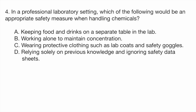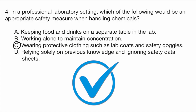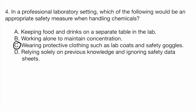We're going to eliminate option D — ignoring safety data is not correct. We're also going to eliminate option B, working alone, because in case something were to happen, there would be no one there to help you. That narrows it to A and C. Option A is not correct because we should never have food or drinks in the lab setting at all — even on a separate table, they should not be in the lab. So the correct answer is C: wearing protective clothing such as lab coats and safety goggles is the most appropriate way to be safe in the lab.